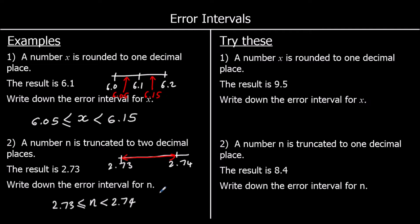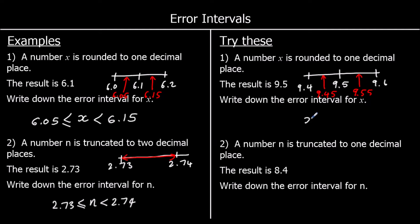Two for you to try — give these a go. Question one: a number x is rounded to one decimal place, the result is 9.5. It must be in between the two halfway points. If it's closest to 9.5, it must be in between 9.45 and 9.55. We're going to say it can equal 9.45 but it can't equal 9.55 — it can equal 9.45 because that would round to 9.5, but it cannot equal 9.55 because that would round up to 9.6.